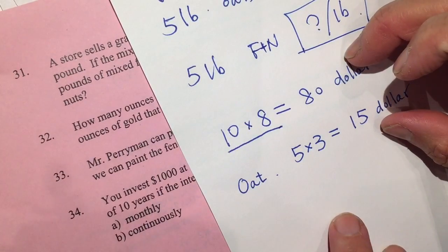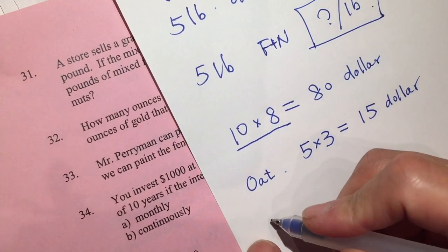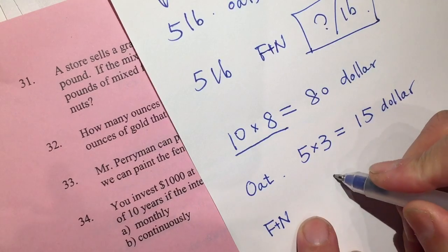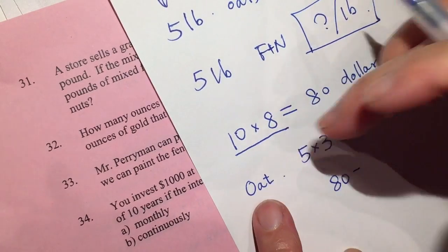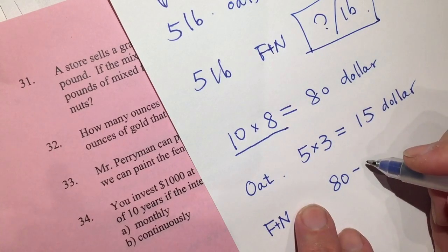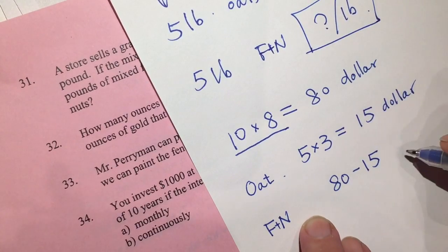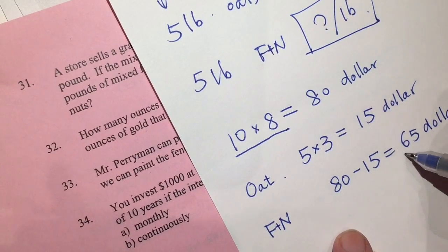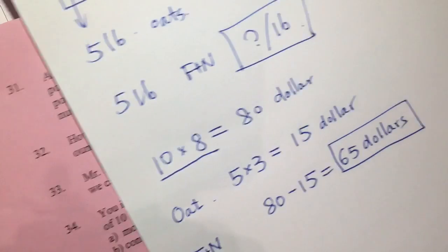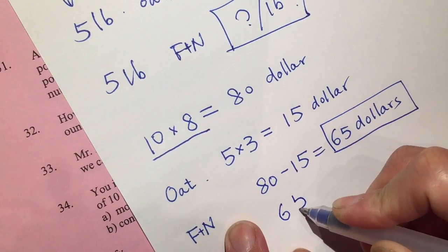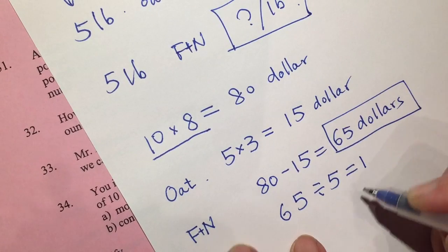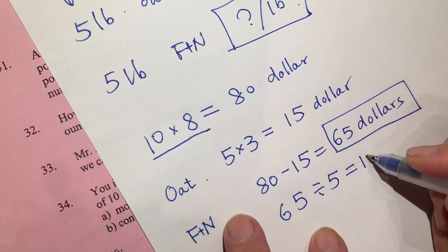So what is the difference? The difference is the price of the fruit and nuts. $80 minus what was costed by the oats, which is $15, is $65. $65 for how many pounds? 5 pounds. So $65 divided by 5 equals...